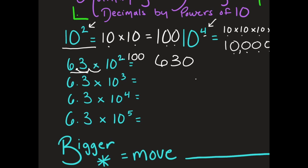Coming down to the next one, I have 6 and 3 tenths times 10 to the third, so I'm really multiplying by 1,000. I take the decimal point and move it once, twice, three times, then fill in those placeholders with zeros. My answer equals 6,300.